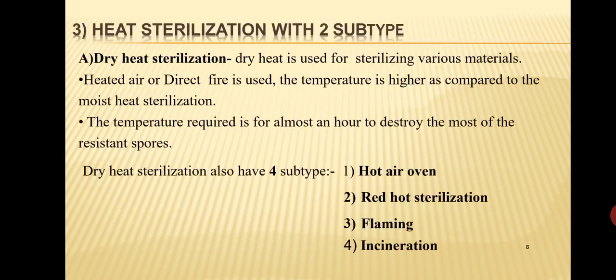Dry heat sterilization has four subtypes: first, hot air oven; second, red hot sterilization; third, flaming; and fourth, incineration.